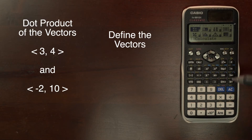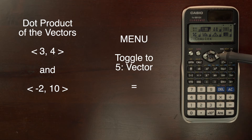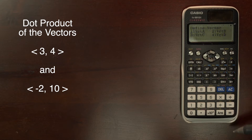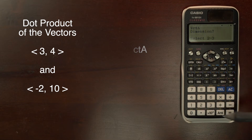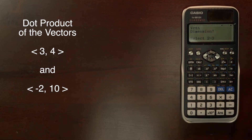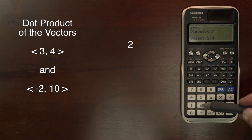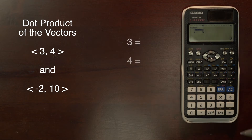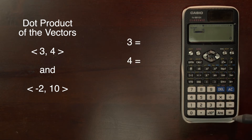Now we look at the dot product and we need to define the vectors. So we toggle over to 5, which is vector. We can now select the vector we choose to enter — that's 1 — and the dimension is 2. We then input our vector: 3 and 4.